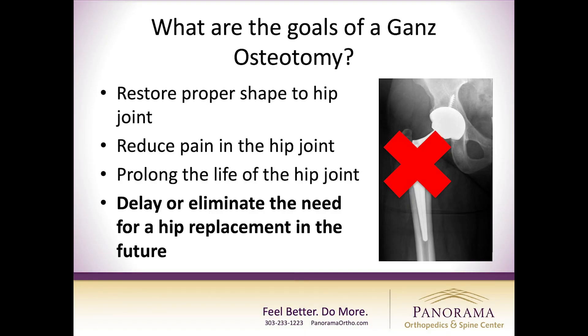The other consideration is anatomy. Some people have such severe dysplasia that the ball is no longer round — it's actually oval-shaped or extruded. In patients with that severity of dysplasia, they're not really good candidates for Ganz procedures because the ball and socket don't mate anymore, and so in those groups we tend not to offer the Ganz procedure.